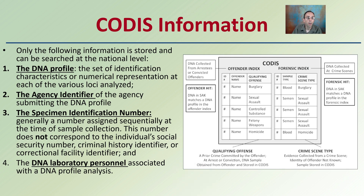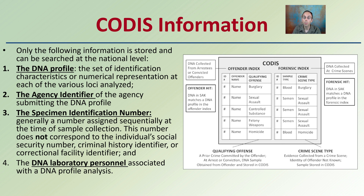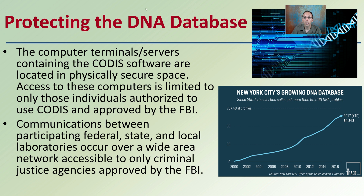Only the following information is stored and can be searched at the national level — there are some protections here. First, the DNA profile, which is a set of identification characteristics or numerical representation at each of the various loci. Second, the agency identifier — the agency submitting the DNA profile — so it's traceable to its source. Third, the specimen identification number, generally assigned sequentially at the time of sample collection. This number does not correspond with the individual's social security number, criminal history identifier, or correctional facilities identifier — it's an independent number. Finally, the DNA laboratory personnel associated with the DNA profile analysis are recorded.